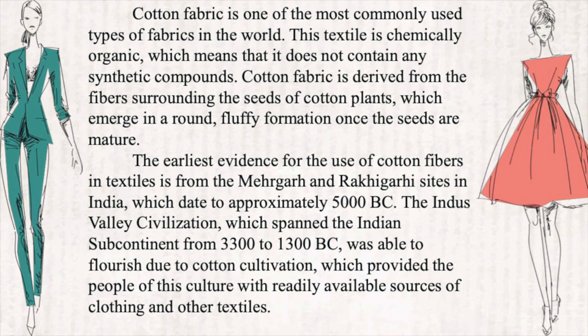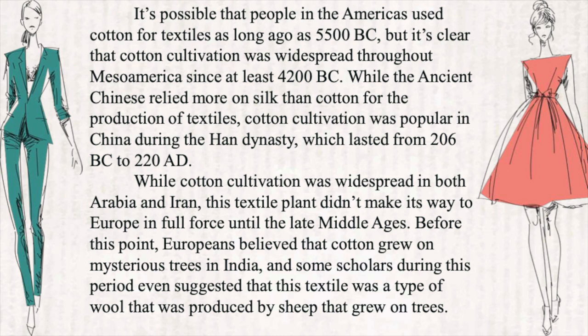It's possible that people in the Americas used cotton for textiles as long ago as 5500 BC, but it's clear that cotton cultivation was widespread throughout Mesoamerica since at least 4200 BC. While the ancient Chinese relied more on silk than cotton for the production of textiles, cotton cultivation was popular in China during the Han Dynasty, which lasted from 206 BC to 220 AD.